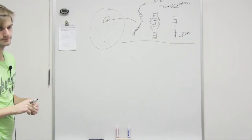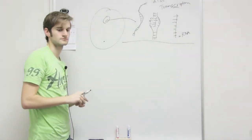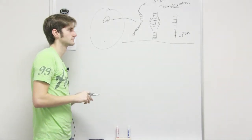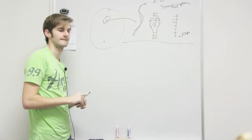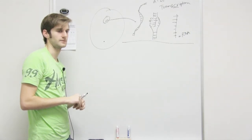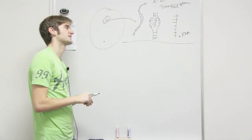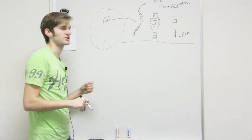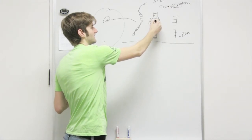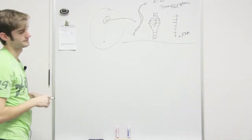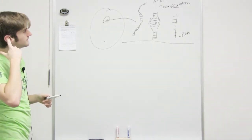So DNA is A, T, G, C, and RNA is A, U, G, C. RNA has a U instead of a T — I just know it's made up differently. But it's making an exact copy: if there's a C on DNA, there's a G on RNA; if there's a T, there's an A. So G and C go together, A and T go together for DNA, but for RNA, A and U go together.